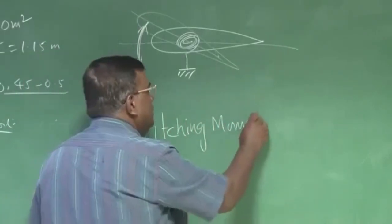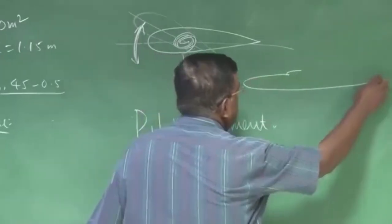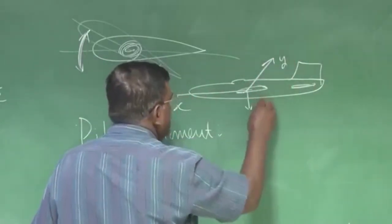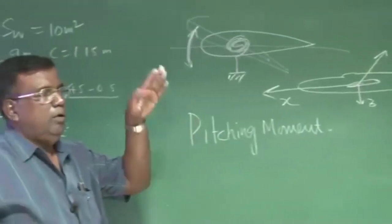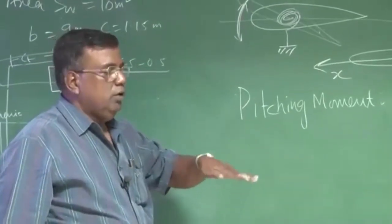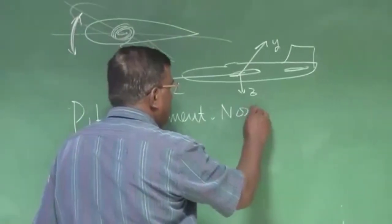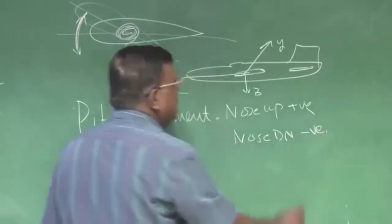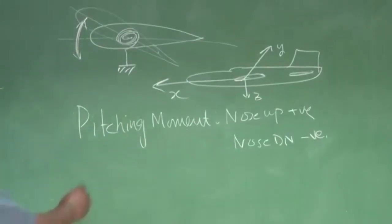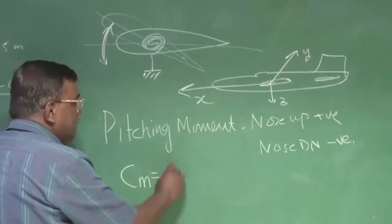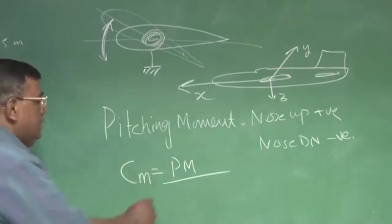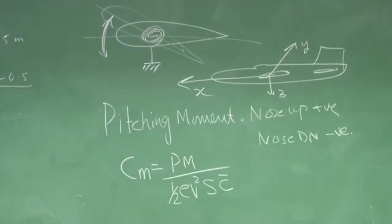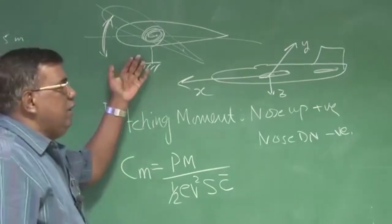By convention, nose-up is positive and nose-down is negative. We also defined the pitching moment coefficient C_m, which is the pitching moment non-dimensionalized with free-stream dynamic pressure, wing area, and mean aerodynamic chord of the airplane. This was the understanding of static stability. We translated this into a neater form where we realized: if I plot C_m versus alpha, one variation could be negative-sloped, another could be positive-sloped, and a third is also possible.